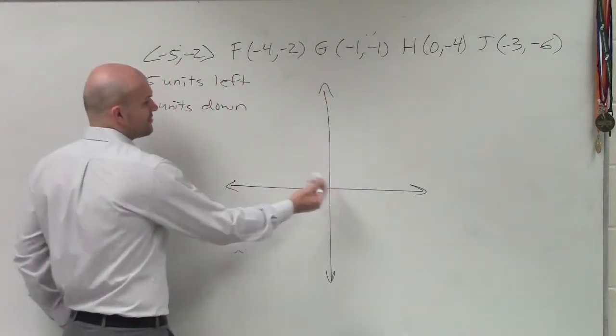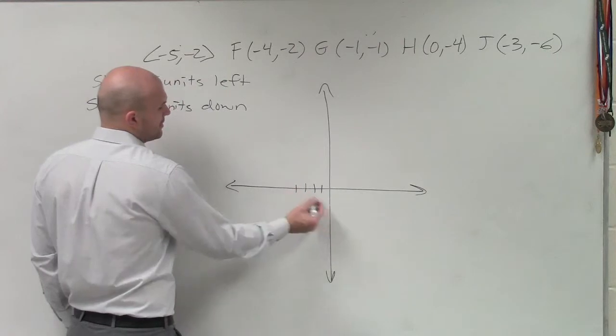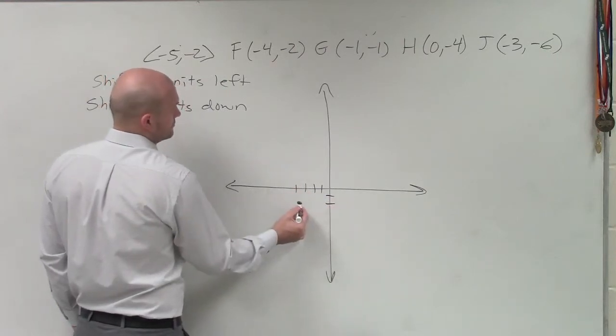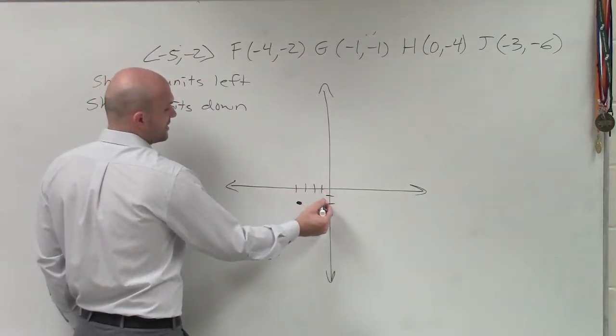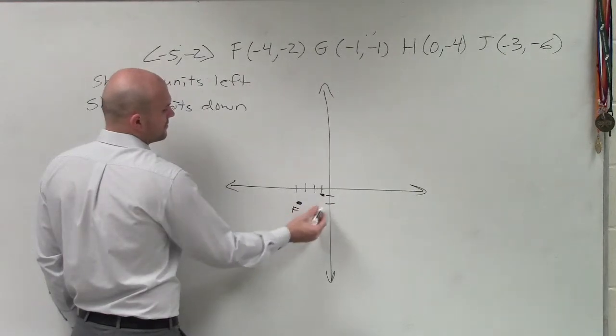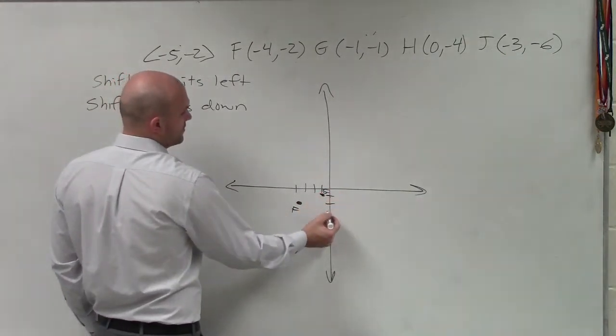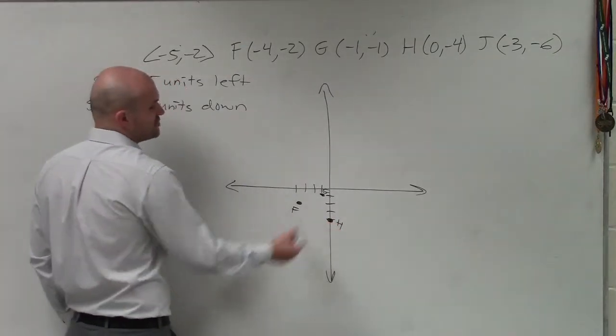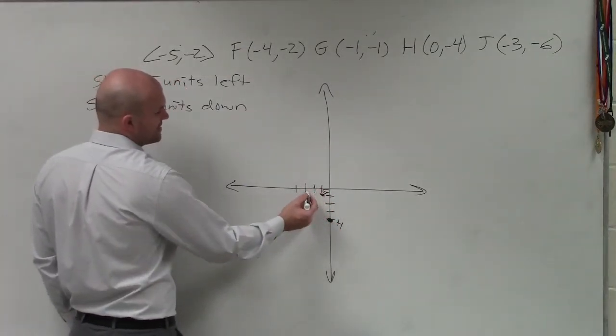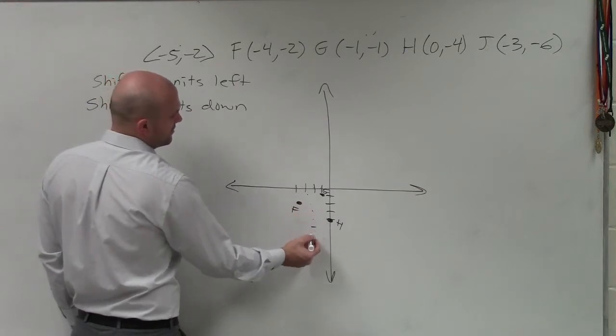So let's go ahead and plot these points. We have F at negative 4, negative 2. We have G at negative 1, negative 1. We have H at 0, negative 4. And we have J at negative 3, negative 6.